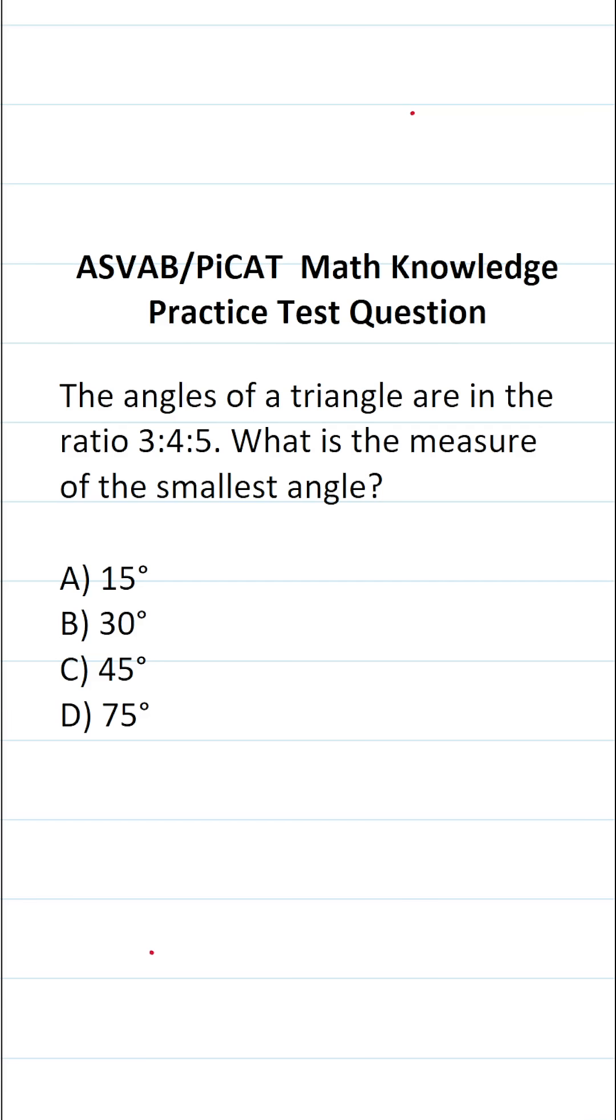This math knowledge practice test question for the ASVAB and PICAT says the angles of a triangle are in the ratio of 3 to 4 to 5. What is the measure of the smallest angle?